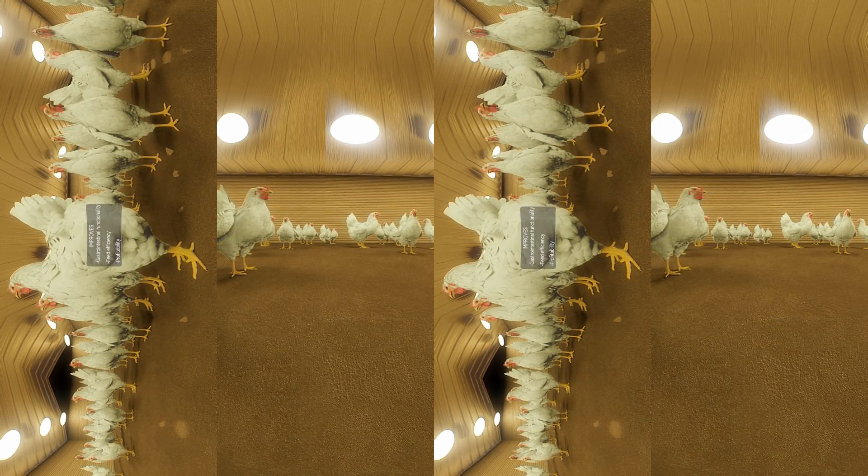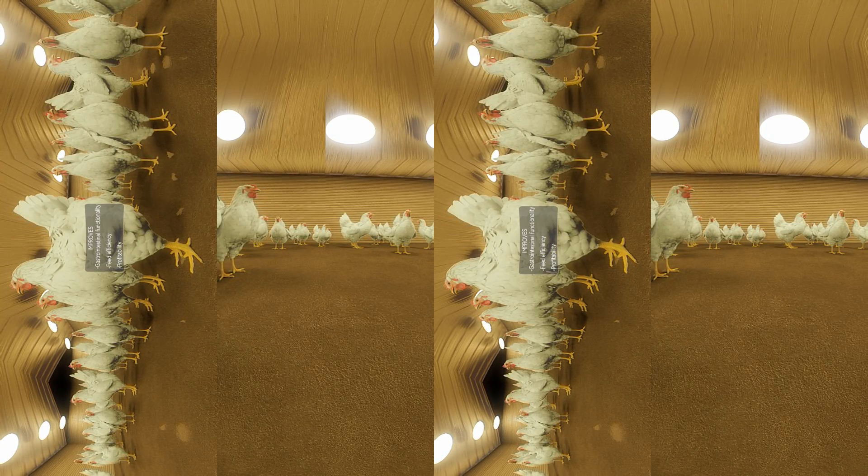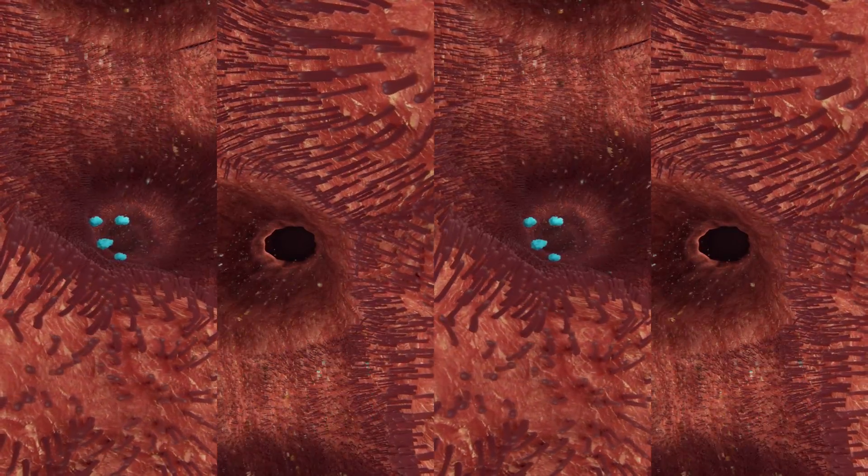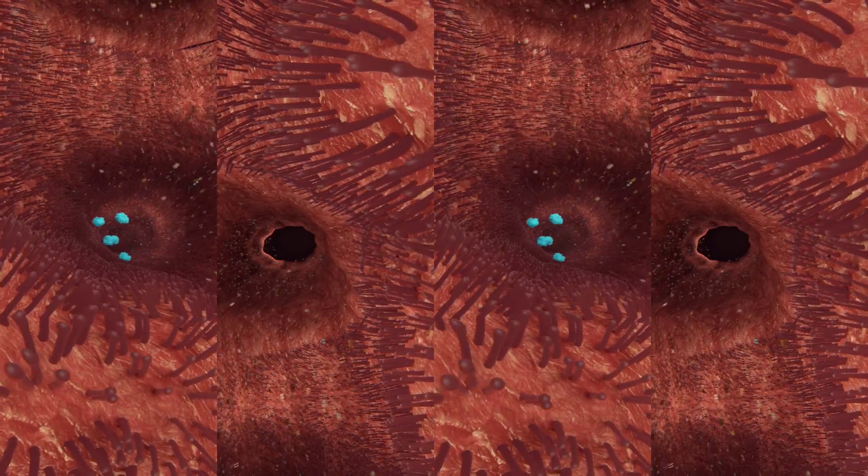Our data shows that Balancius improves gastrointestinal functionality by enhancing nutrient digestibility and absorption. Hydrolysis of PGNs in cell debris allows its proper processing and degradation, resulting in an increase in feed efficiency.